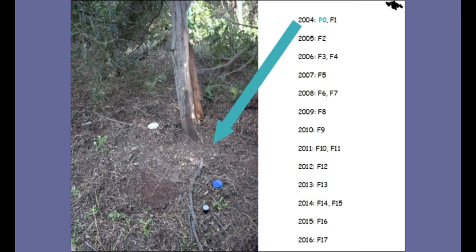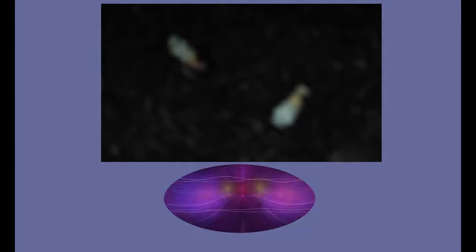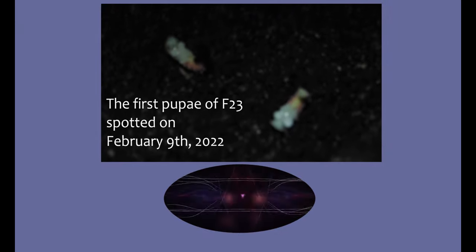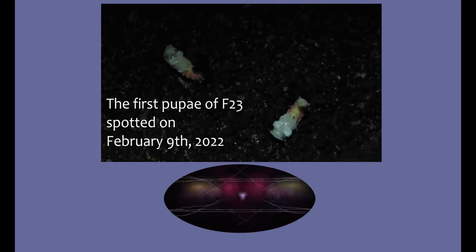These glowworms originate, big surprise I know, from the island of Sardinia. Back in 2004 I was able to obtain a few larvae from that Mediterranean island. Now in 2016, the 17th generation of their offspring has hatched. By now we have the year 2022 and my colony is currently on the verge of generation 24. Nice!